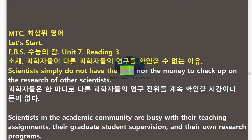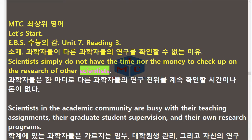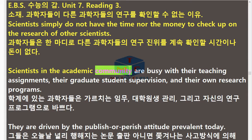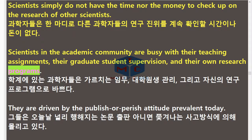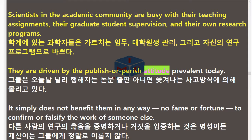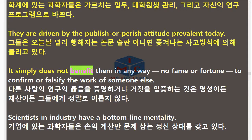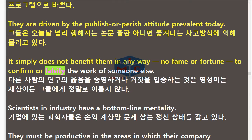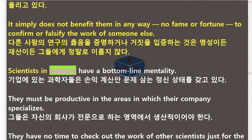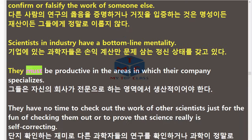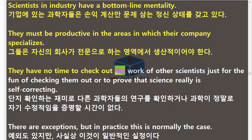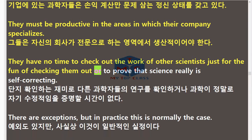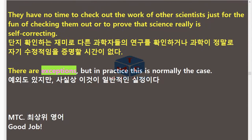Scientists simply do not have the time nor the money to check up on the research of other scientists. Scientists in the academic community are busy with their teaching assignments, their graduate student supervision, and their own research programs. They are driven by the publish or perish attitude prevalent today. It simply does not benefit them in any way — no fame or fortune — to confirm or falsify the work of someone else. Scientists in industry have a bottom-line mentality; they must be productive in the areas in which their company specializes. They have no time to check out the work of other scientists just for the fun of it, or to prove that science really is self-correcting. There are exceptions, but in practice this is normally the case.